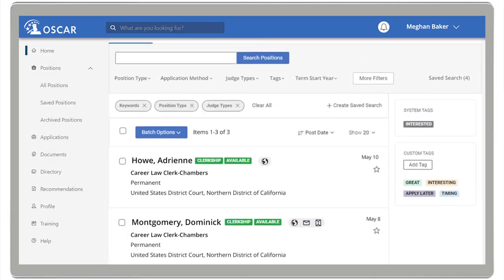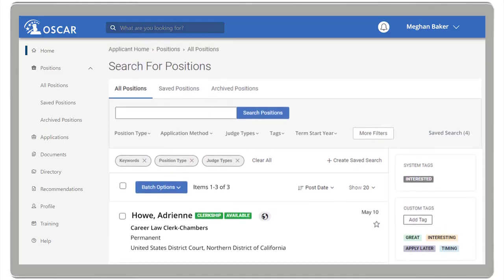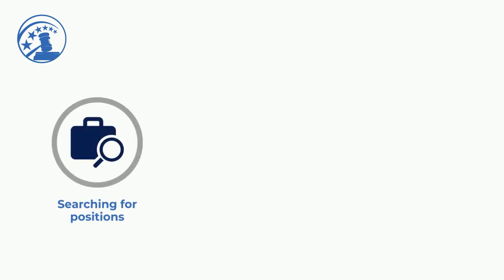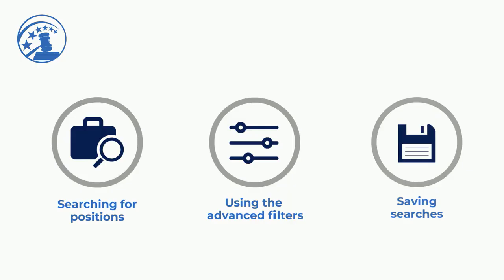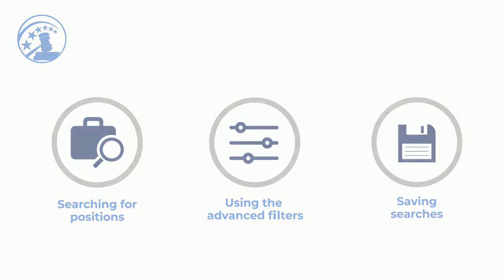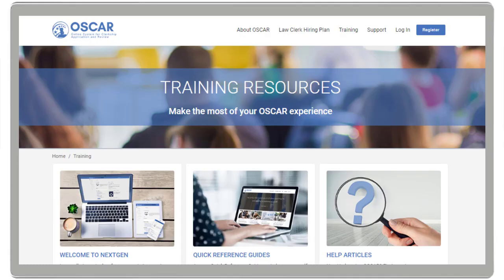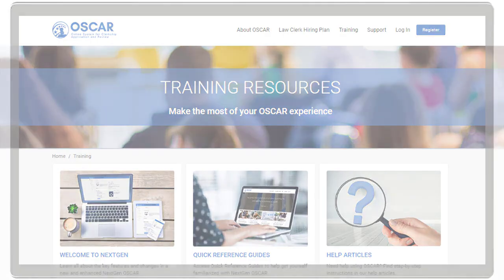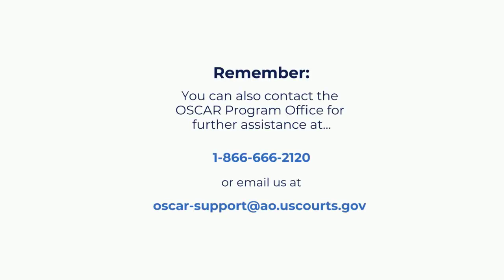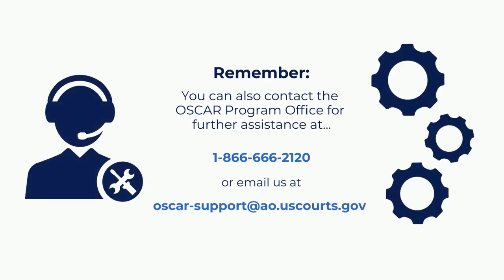This concludes our video on how to search and save positions. We hope you have learned more about searching for positions, using the advanced filters, and saving searches. Visit the OSCAR training page for more videos and resources. If you need further assistance, please contact the OSCAR Program Office at 866-666-2120 or send an email to oscar-support@ao.uscourts.gov. Thank you for watching.